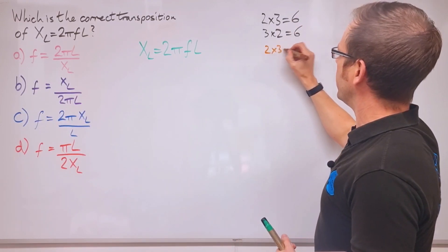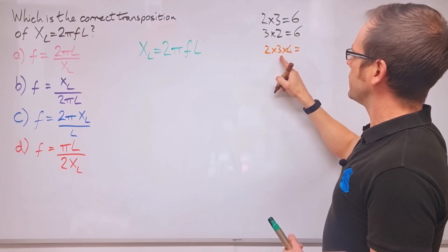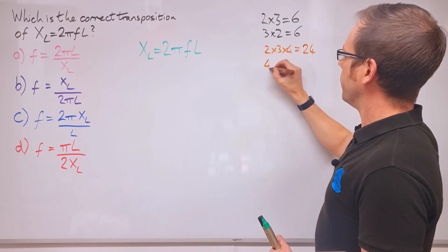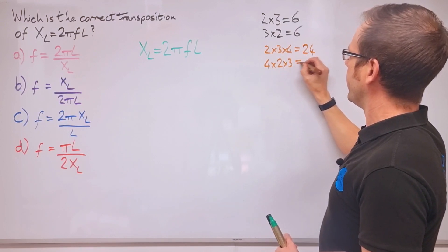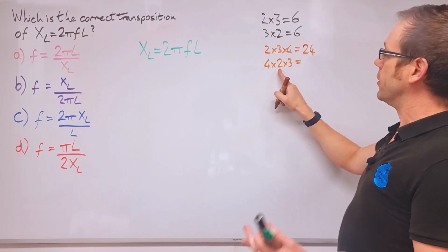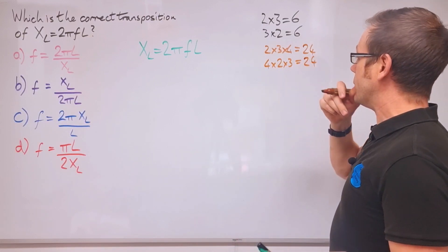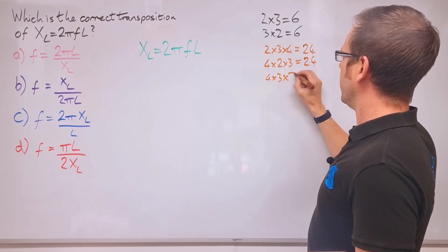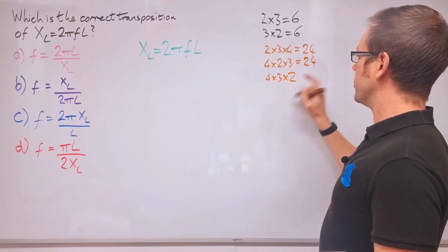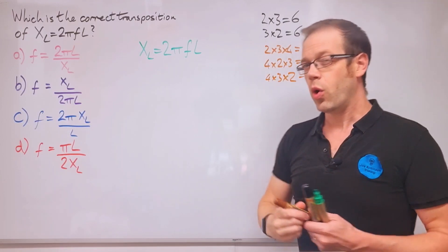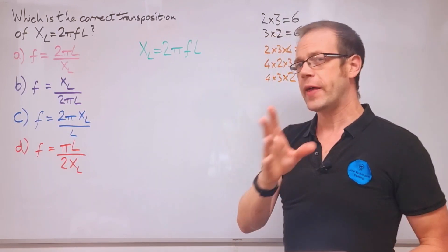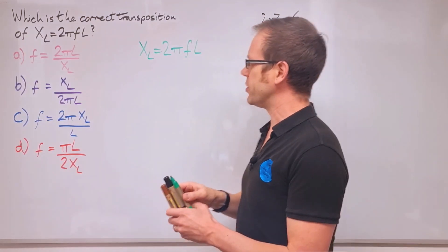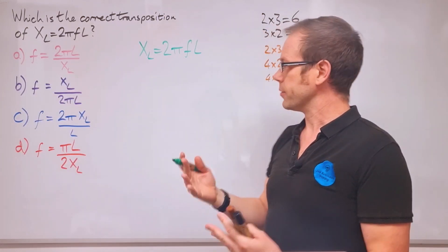We can prove it further using more numbers: two times three times four equals 24, and four times two times three also equals 24, and four times three times two also gives 24. So it doesn't matter what order we multiply in. That allows us to manipulate this side of the formula without changing whether it's true or not, because it still remains true.